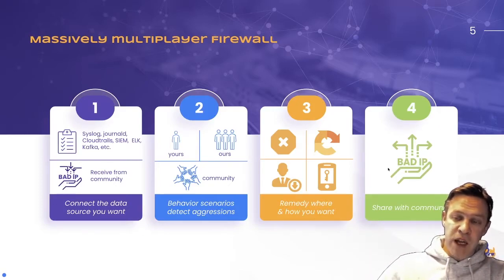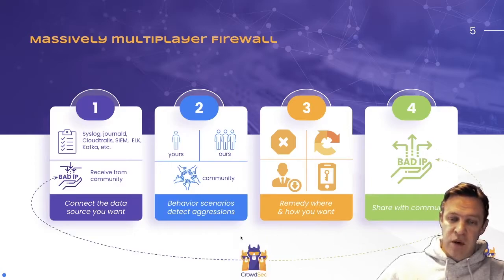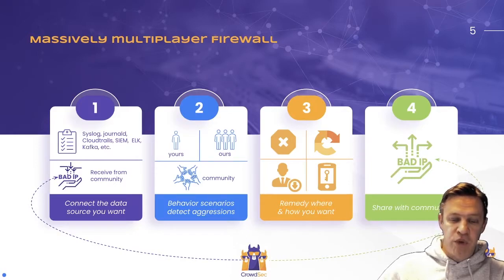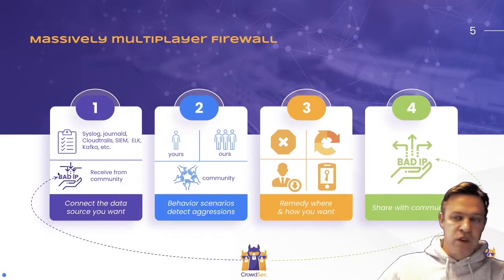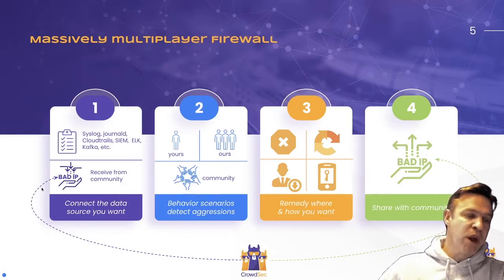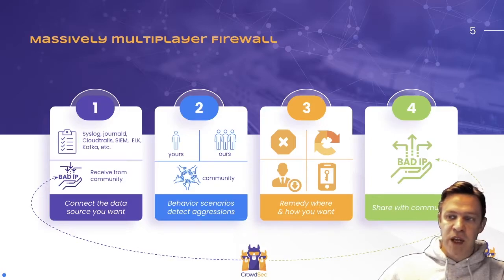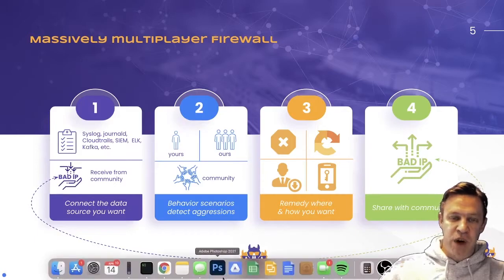Once you've found a bad IP, you can share it with us. We'll do curation to make sure it's an accurate signal and not a poisoning attempt or false positive. Then we'll send it back to the community, so that when you detect someone, everyone benefits from it and you benefit from everyone else's detection. That's how we make the wheel spin — this is a massively multiplayer firewall.